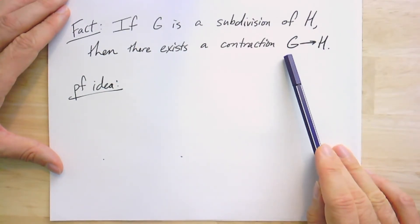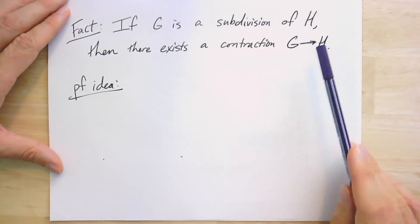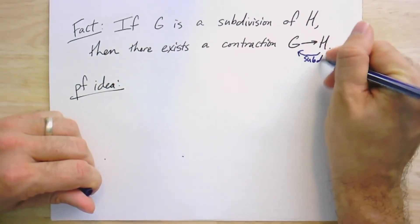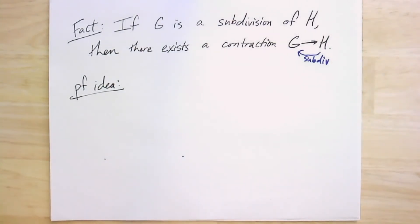It's useful to think of this now as going in the opposite direction as subdivision. Right? We took H, we subdivided it to get G. That is, subdivision kind of went this way. And now we get a contraction in the other direction.